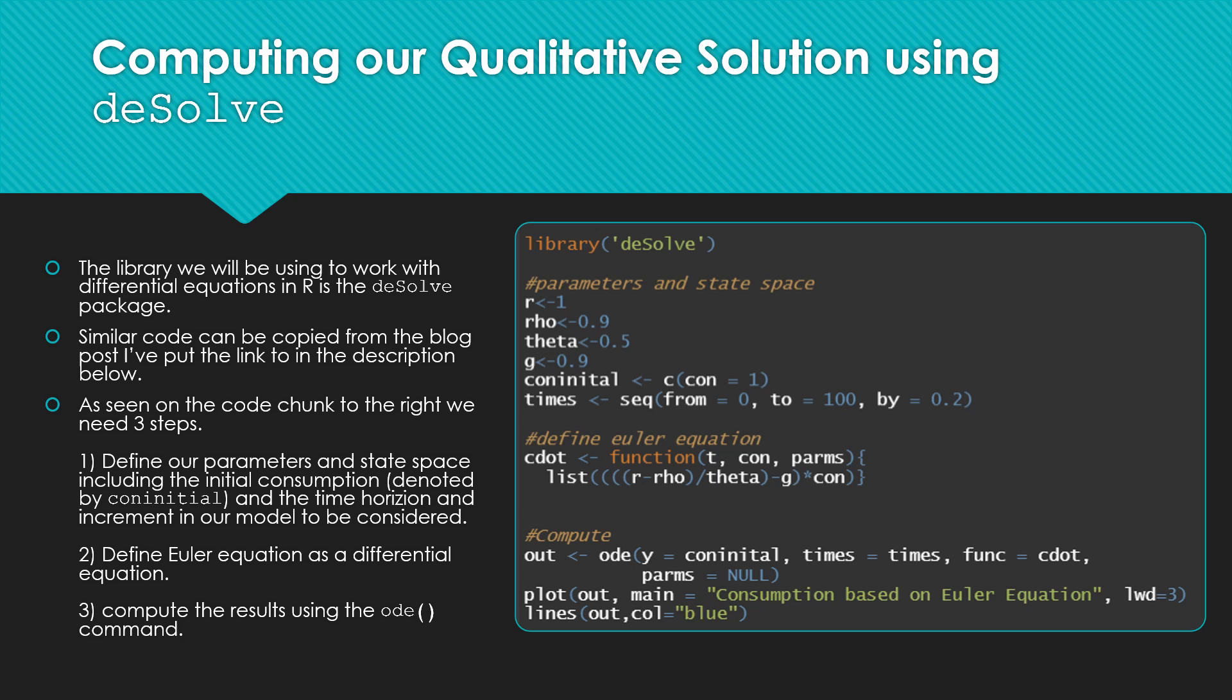As seen in the code chunk on the right, we need three steps. First, we need to define our parameters and state space, including our initial consumption, denoted by con_initial, and the time horizon and increment in which time will be moving in our model.